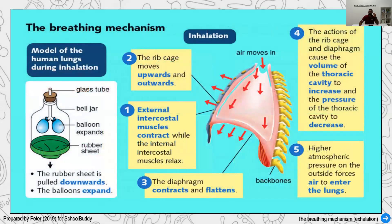Now we'll talk about breathing — how humans take air in and out. First we'll look at inhalation. There are a few mechanisms and structures involved. We have the external intercostal muscles — 'intercostal' meaning between the ribs — located on the outside. We also have the backbone, the rib cage shown in yellow, and the diaphragm muscle. All these structures help you breathe in and out.